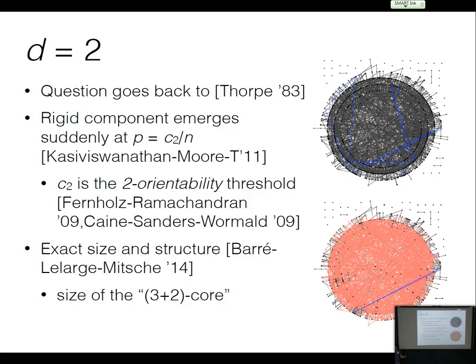I added one more edge to a sparse G(n,p) with p = C/n, and got a new color of edges — pink — and now the pink things form one large rigid subgraph. There's a kind of sharp threshold at this constant C₂/n. C₂ is the threshold at which the three-core stops being two-orientable, meaning if p is less than C₂/n, with high probability you can orient the graph so each vertex has out-degree at most two.